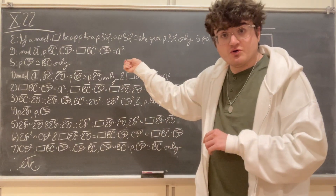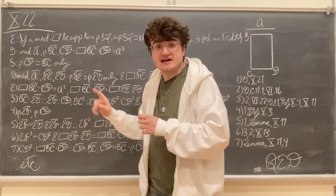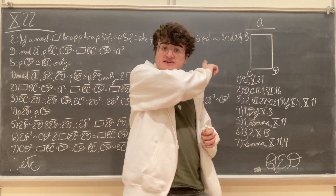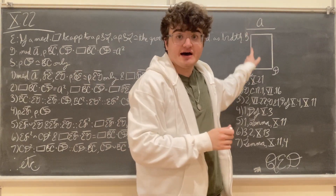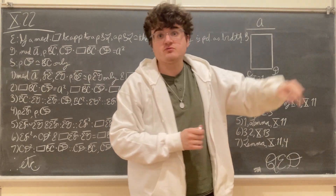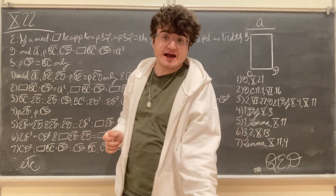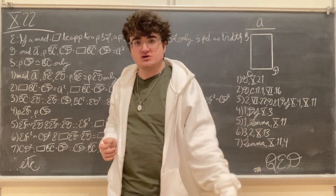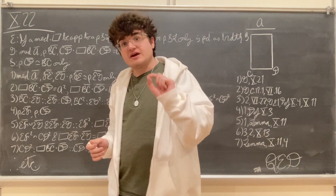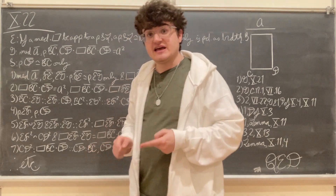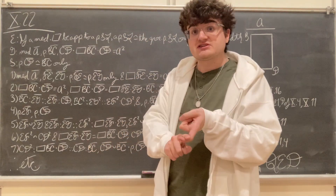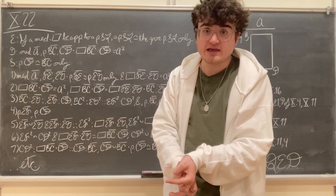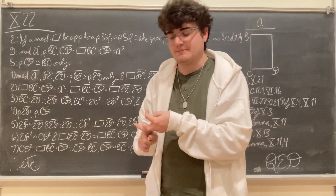Now what we want to prove is that the straight line CD, which is the breadth of this rectangle applied to BC equal to A squared, is rational and commensurable in square only with BC.